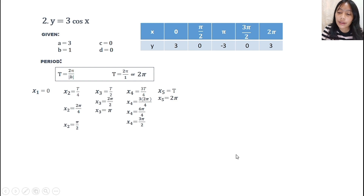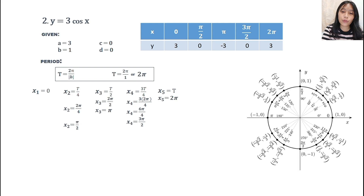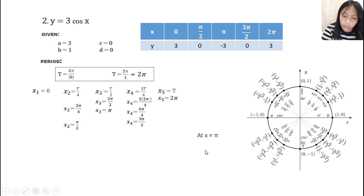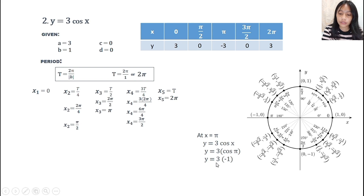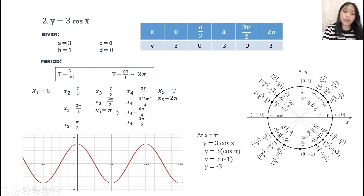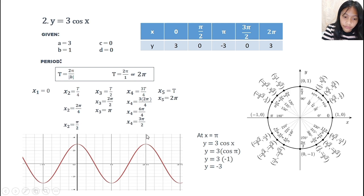Here we have our table of values. To find the value of y, we substitute the value of x into the function. For example, y equals 3 cosine pi. The value of cosine pi from the unit circle is negative 1, so y equals 3 times negative 1, which is negative 3. On the graph, we can see x equal to 0 gives y equal to 3, pi over 2 gives 0, and 2 pi gives y equal to 3.